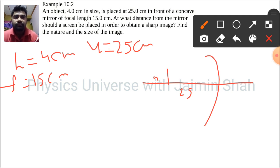At what distance from the mirror should a screen be placed to obtain a sharp image? See, wherever we place a screen, we get an image at that particular point. So to place that screen, we have to find the image distance.